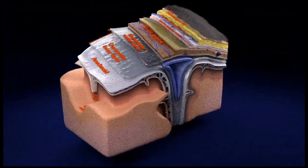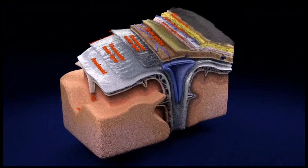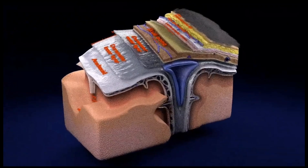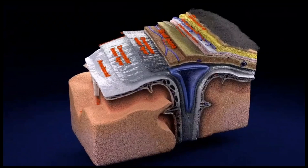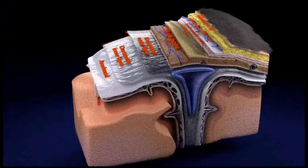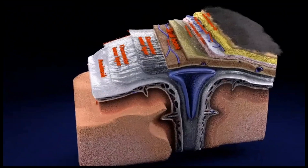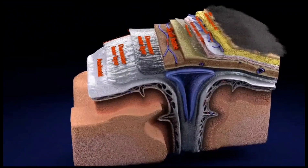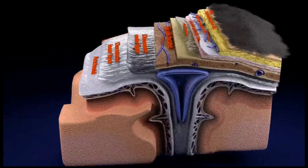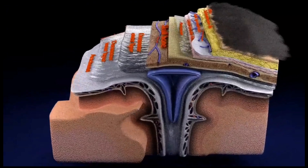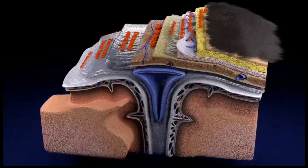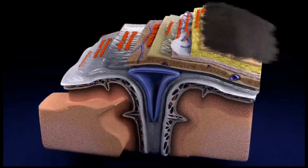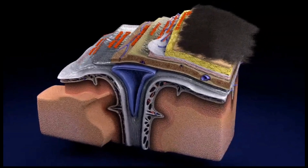The term leptomeninges includes the arachnoid and pia mater. The arachnoid mater is a thin and delicate membrane that surrounds the brain loosely and is separable from the dura by a potential space into which subdural hemorrhage may occur. It consists of layers of connective tissue, is avascular, and does not receive any innervation.